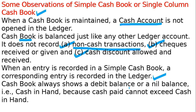Cash book always shows a debit balance or nil balance — this was already explained above. Cash book will always either show a debit balance or zero balance. It cannot have a credit balance, because the total cash paid cannot exceed cash in hand plus cash received. At best you can pay everything and have zero balance; otherwise it will have a debit balance. The cash book cannot have a negative balance — these are all important points to observe.